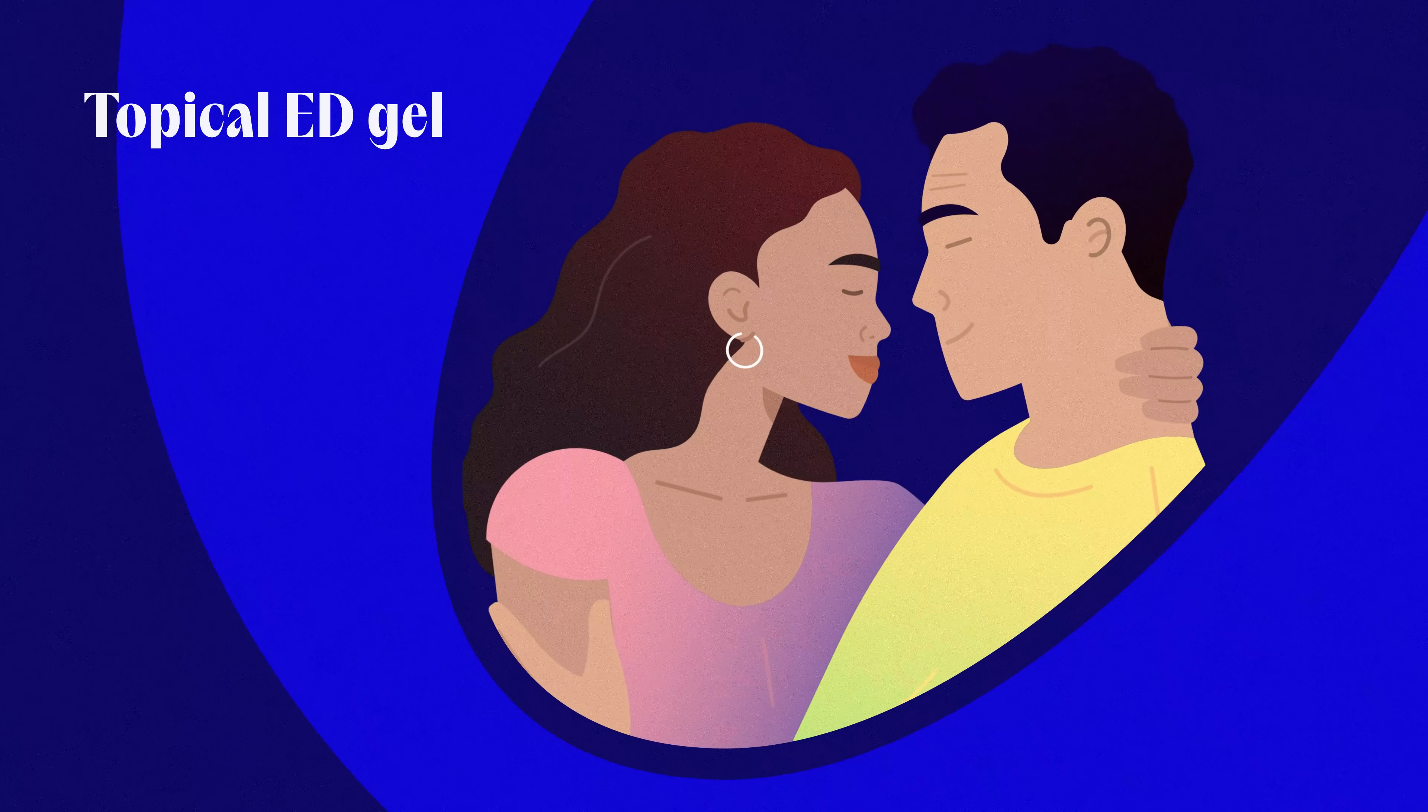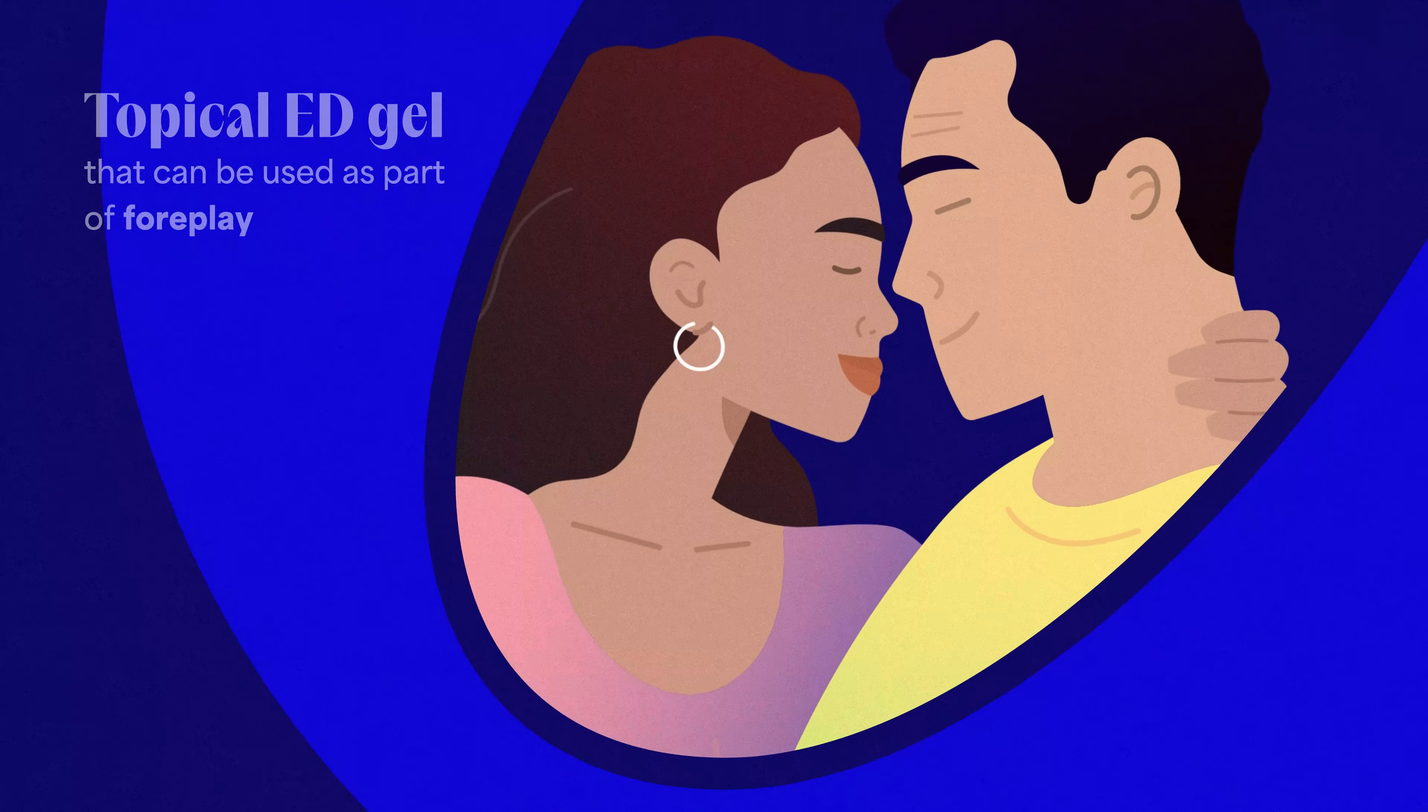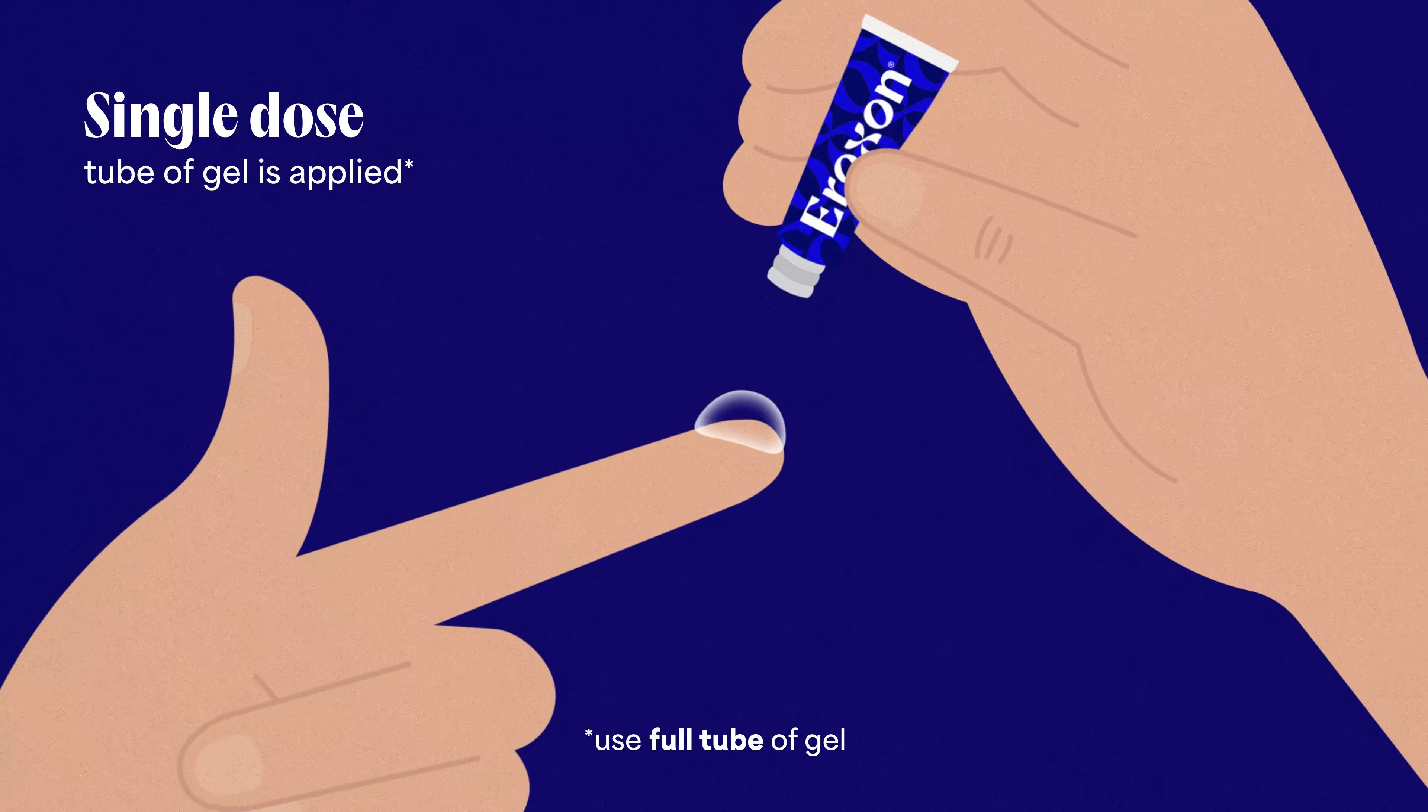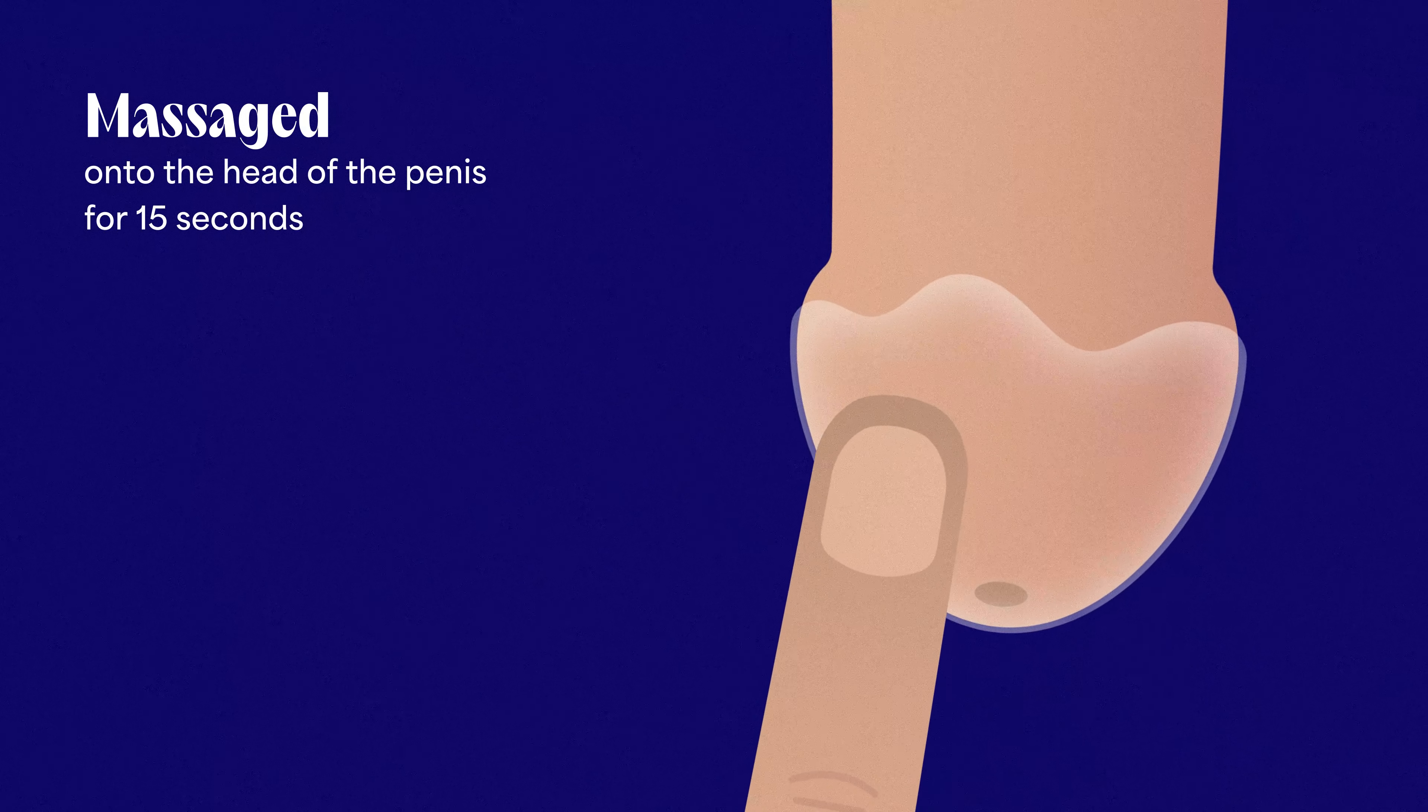Eroxone is a topical ED gel that can be used as part of foreplay and sexual stimulation with a partner. Eroxone works when the contents of a single-dose tube of gel is massaged onto the head of the penis for 15 seconds.